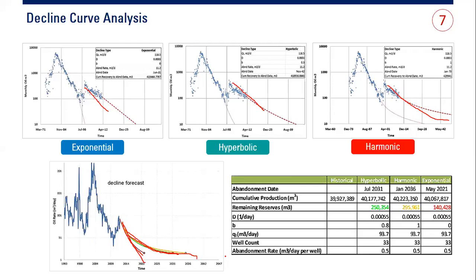I plot all three: this one for exponential, this one for hyperbolic, and this one for harmonic. Rather than giving you just one profile, I give you a range — the lowest is exponential, the highest is harmonic. We can say that using this analysis, our remaining reserve is between 140 as the lowest to 295 as the highest estimation. Between them we have 250 as our forecast for remaining reserve.